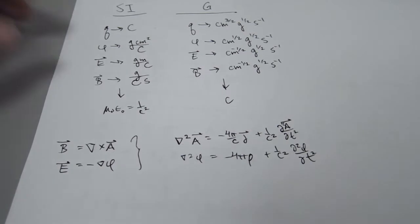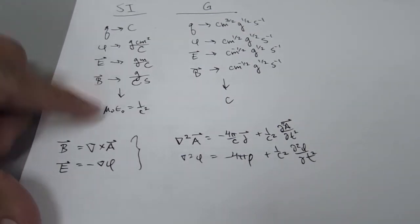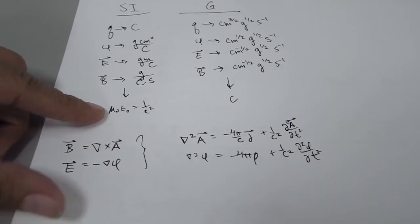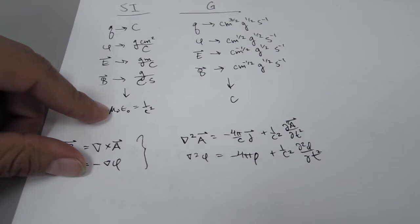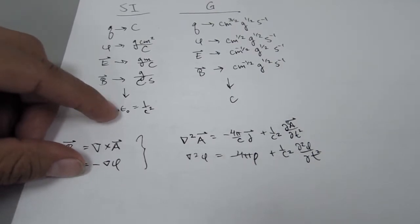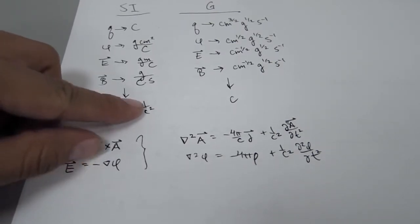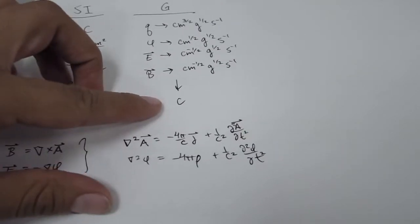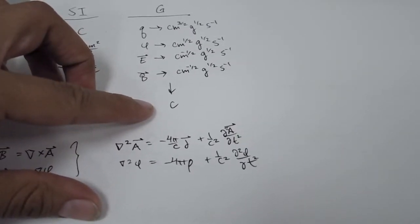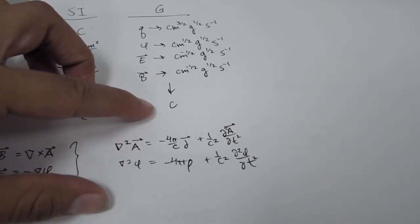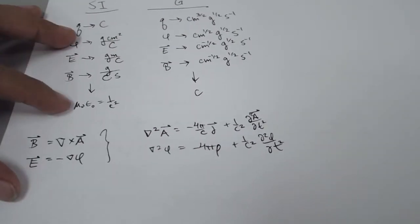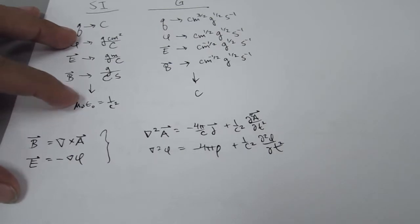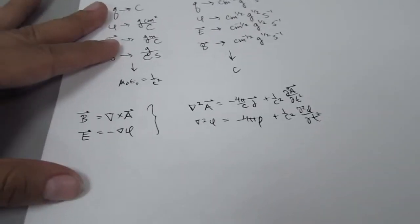Historically, we still call them Maxwell's equations. In SI units, they give this relationship: permeability of free space times the permittivity of free space equals 1 over the speed of light squared. But in Gaussian units it's more straightforward — it just gives you c. There is no mu-naught nor epsilon-naught in Gaussian units.